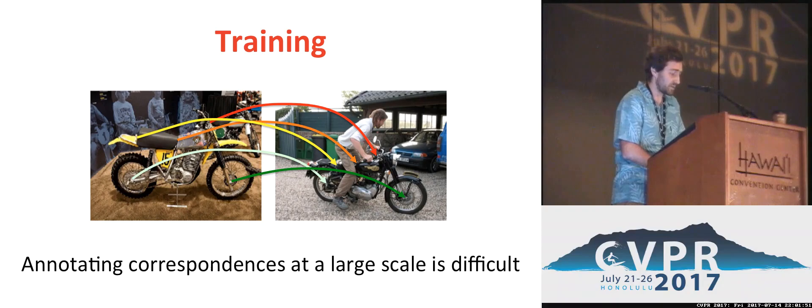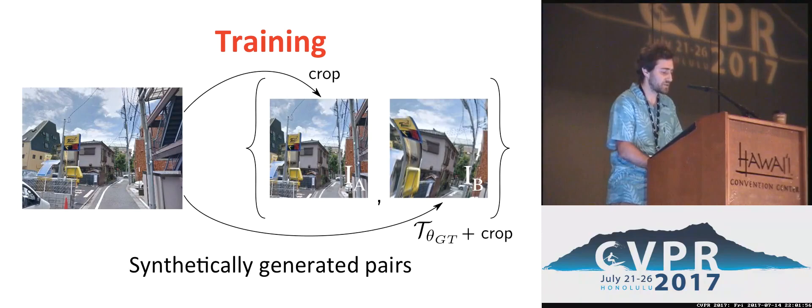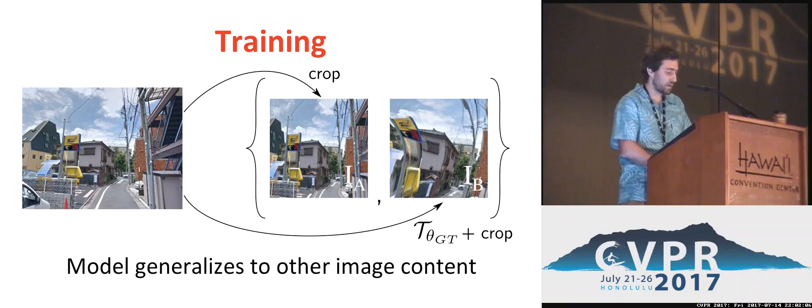One of the difficulties of this problem is finding suitable ground truth data for training. To address this, we train our model from synthetically warped images from Street View, where the ground truth transformation is known. Thanks to our matching layer that captures geometric image correspondences independently of the actual image content, we show that our model generalizes to unseen objects at test time.